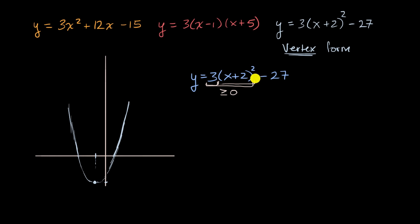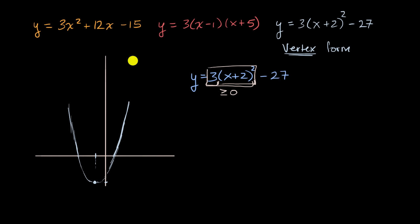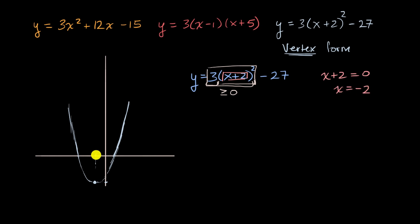So it's only going to be additive to negative 27. Your minimum point for this parabola is going to happen when this expression equals zero — when you're not adding anything to negative 27. When will this equal zero? It's going to be zero when x plus two equals zero. To find the x-coordinate of the vertex, we ask: for what x value does x plus two equal zero? We subtract two from both sides and get x is equal to negative two.